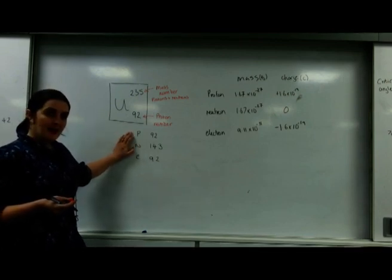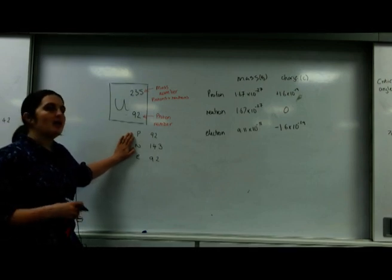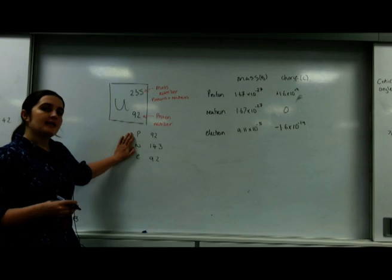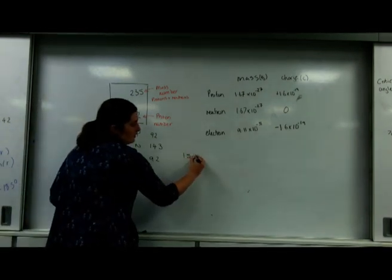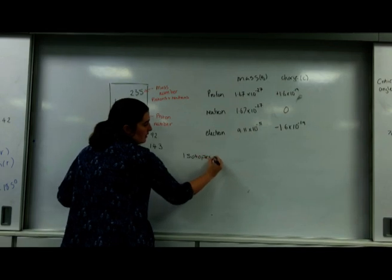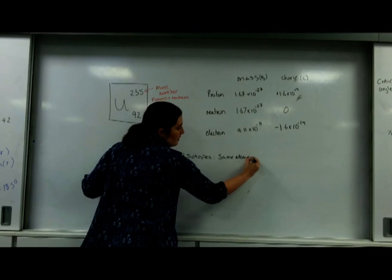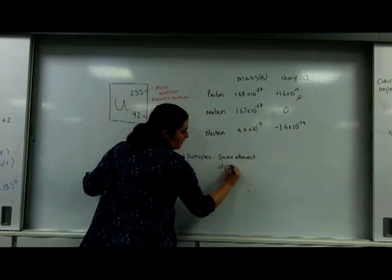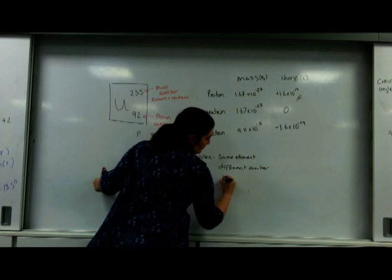Neutrons here, they can change too. You can have uranium-238, uranium-236. These are known as isotopes: the same element with a different number of neutrons. And this is important for nuclear decay.